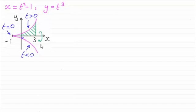So I've got an example here where I've got the equation x equals t squared minus 1 and y equals t cubed. And I've got a sketch of that parametric equation. You can see that when t equals 0 we get that x equals minus 1 and y equals 0, so it crosses the x axis here at minus 1, 0.